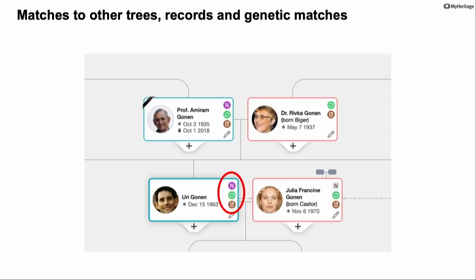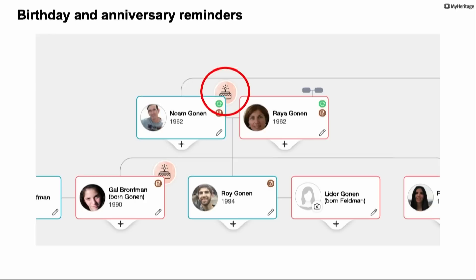We have three different icons. The magenta ones are DNA matches — if you took a DNA test for yourself or a relative, you can access it directly from the tree. The green icons are for what we call smart matches, which are matches to other trees on MyHeritage that have the same people. And the brown icons are what we call record matches, which are matches to historical records, or trees not on MyHeritage such as FamilySearch, the Genie tree, and other smaller trees.